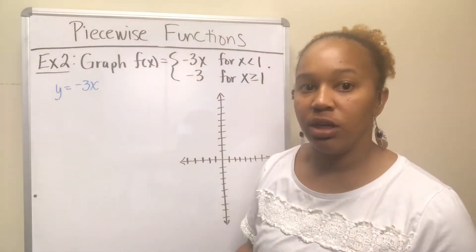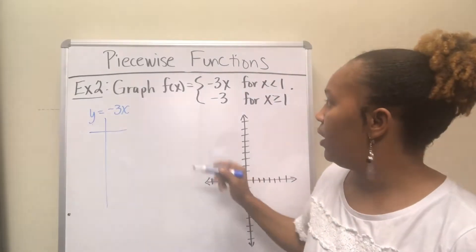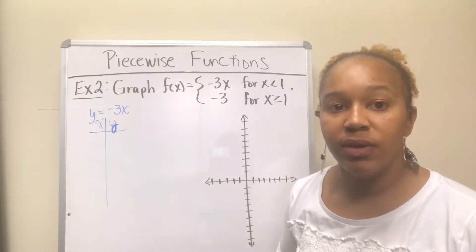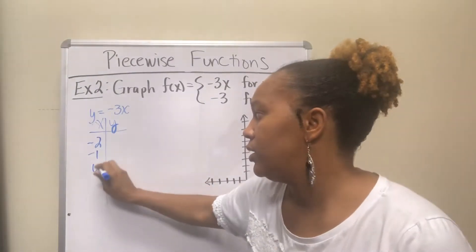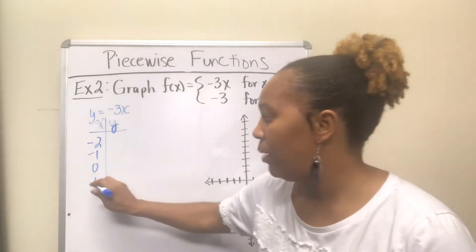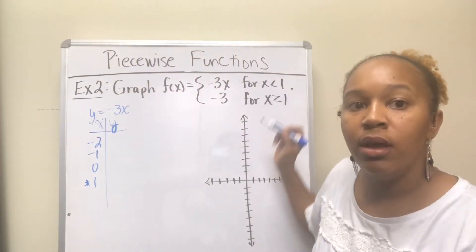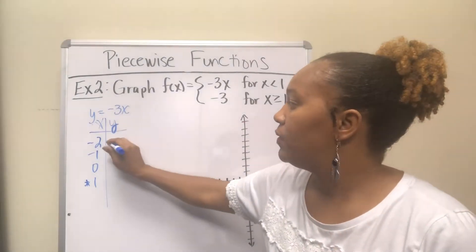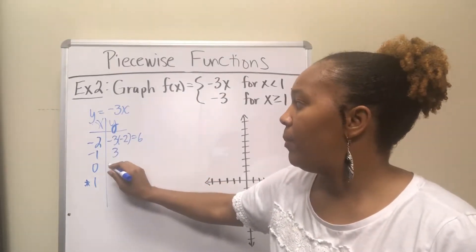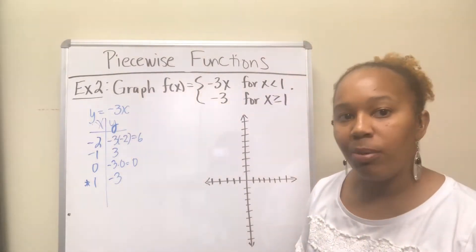Since f(x) and y are interchangeable, I'll make a t-chart with x and y values. The restriction says x is less than 1, so I'll pick x values less than 1: negative 2, negative 1, and 0. I'll also plug in 1 to see where the graph stops, but I'll mark it with a star because 1 is not included — it will be an open circle, not a closed circle. Plugging in: negative 2 gives 6, negative 1 gives 3, 0 gives 0, and 1 gives negative 3.